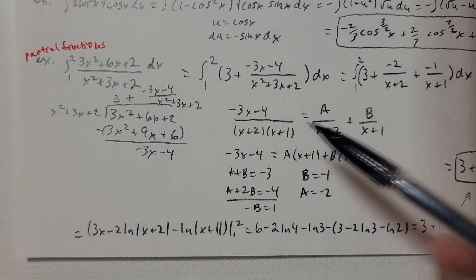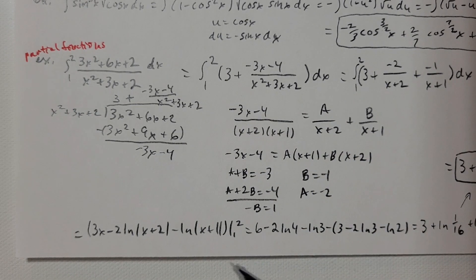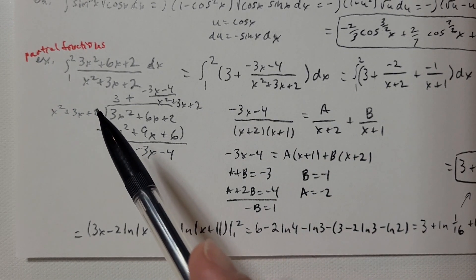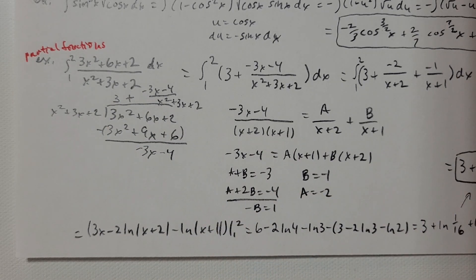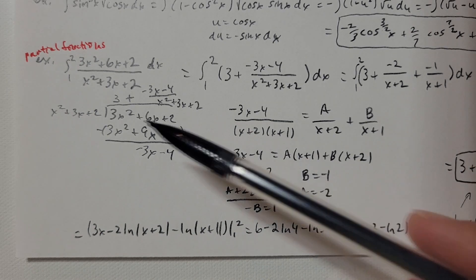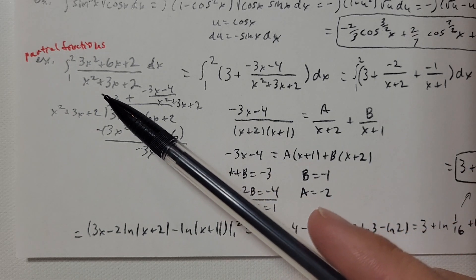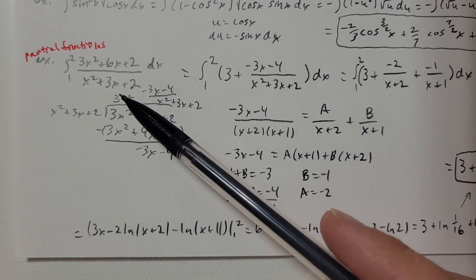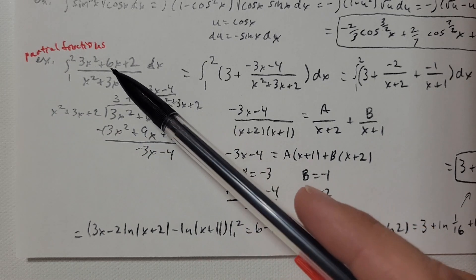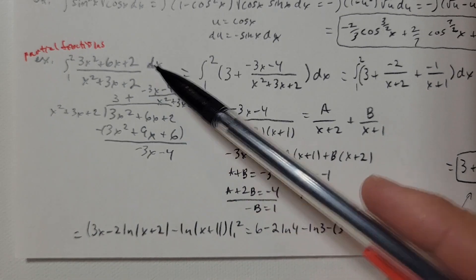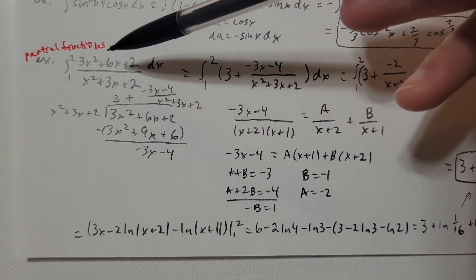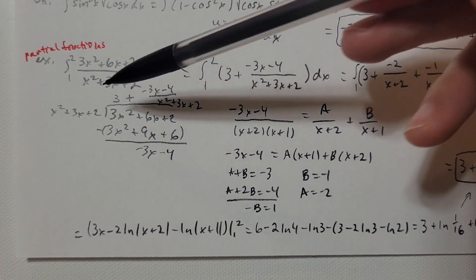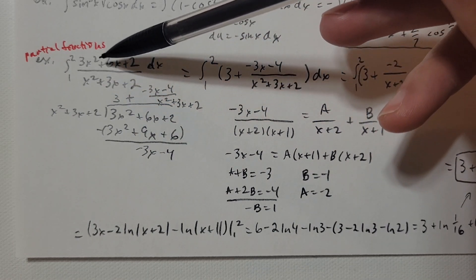Let's try another example. Here I've got a definite integral and a rational function. A u-substitution won't work — if I let u be x squared plus 3x plus 2, then du is 2x plus 3, and that's not what I have up top. But the degrees are the same: I've got a degree 2 polynomial on top and a degree 2 polynomial on the bottom.